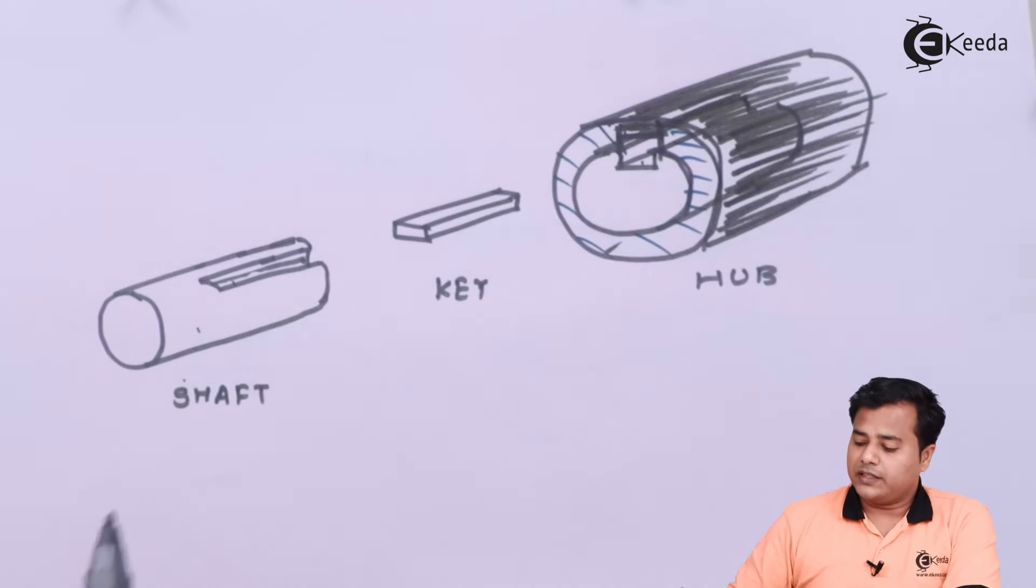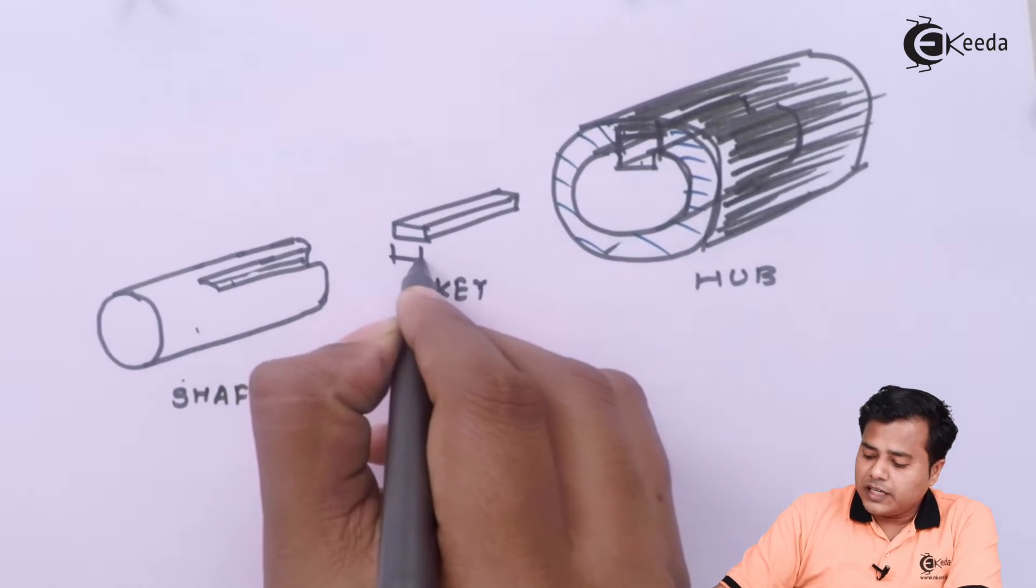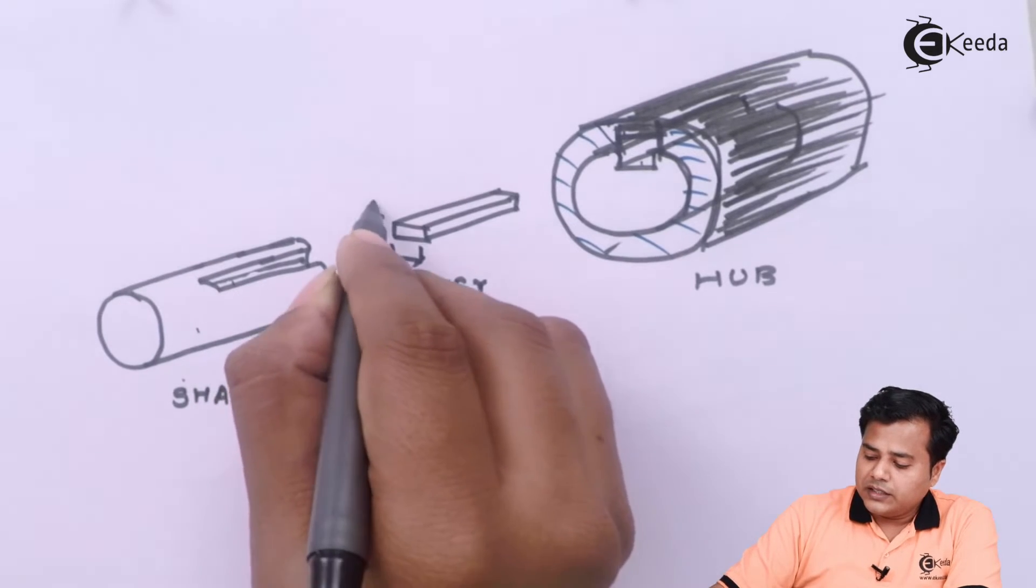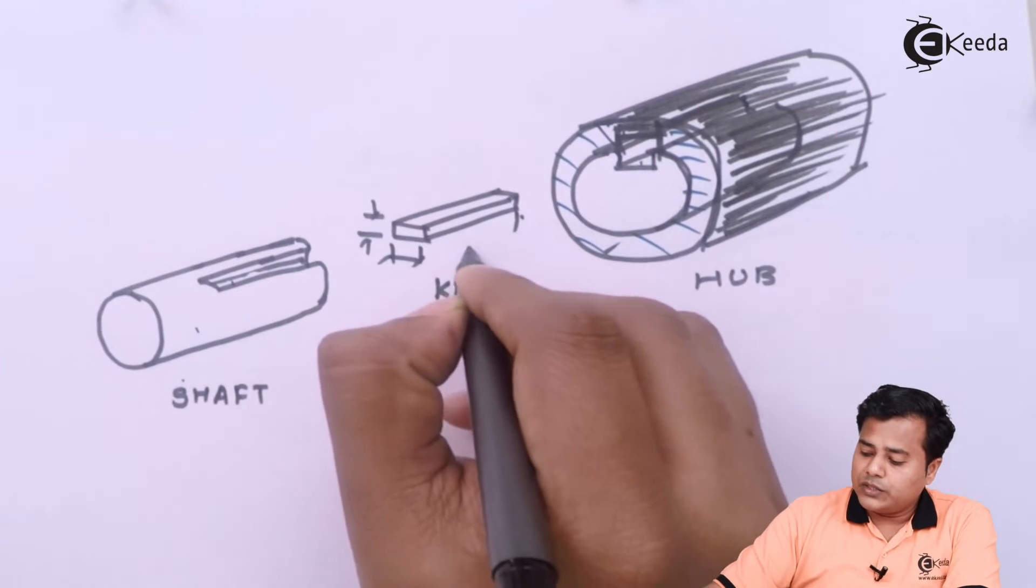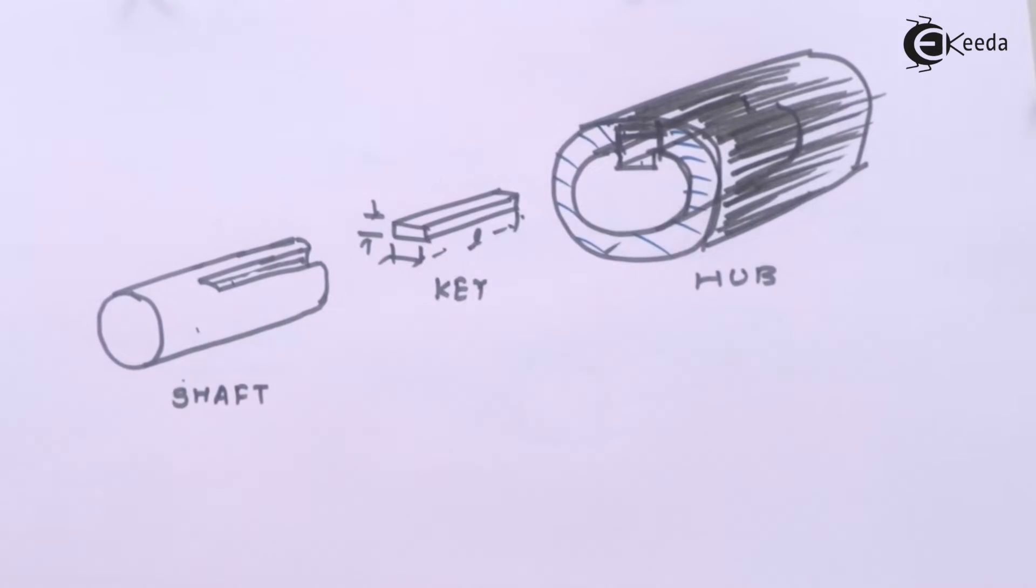We need to understand there are important factors like this dimension of key, this dimension of key and of course the length of key. Based on the power being transmitted and the rotational speed, we will find out this dimension and that is what the purpose we have.